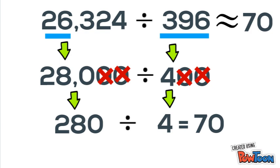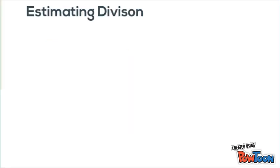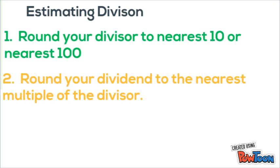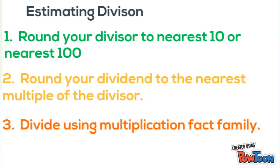So to sum it all up, how to estimate division problems: first round your divisor, then round your dividend to the nearest multiple of that divisor, and then divide using your multiplication fact families. Thanks for watching, peace out!